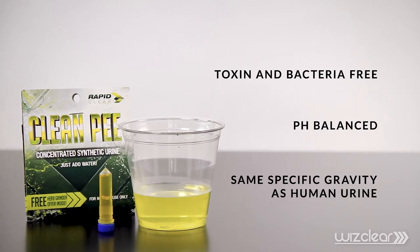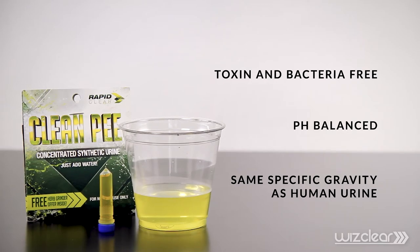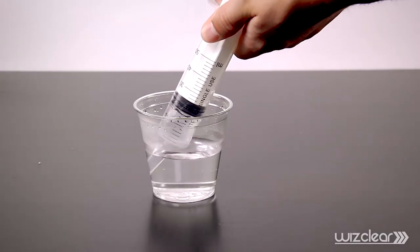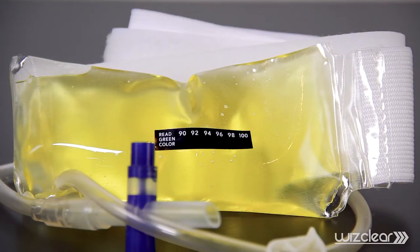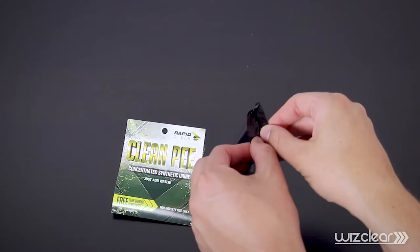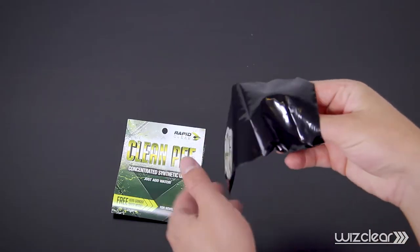Measure out 60 milliliters of room temperature water using the included syringe. Tap water is fine. Make sure the water isn't too warm. Using water that is too warm will make the temperature strip on the WizClear read over 100 degrees, giving the impression it is not reading anything, when in reality it's just too hot. If the urine is too hot, let it cool before filling your WizClear.